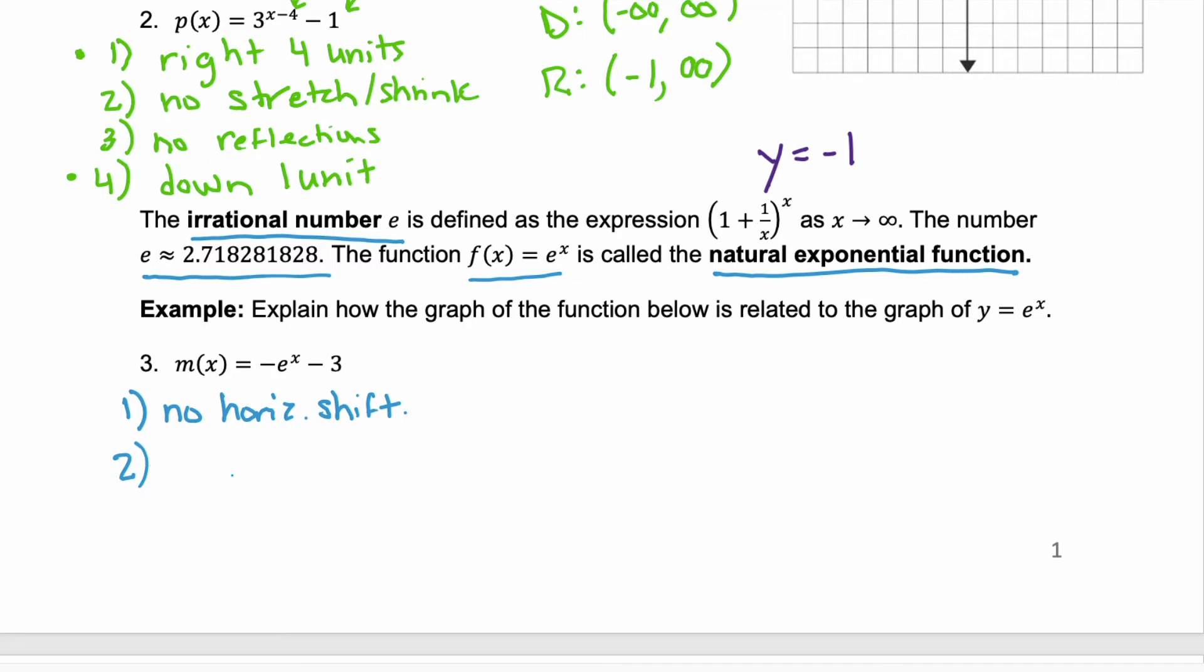Next, you're looking for a stretch or a shrink. Are you multiplying the function by anything? No, there's no stretch or shrink here. Third is looking for a reflection. Are we multiplying by a negative? And we are. See this negative in the front? That tells us that we're reflecting over the x-axis. And then lastly, we're looking for those vertical shifts. Are we shifting up or down? And that's our -3 here at the end. The negative tells us to go down, and we're going down 3 units. So those are the two transformations you have on the mother function y = e^x in order to get this new function m(x).